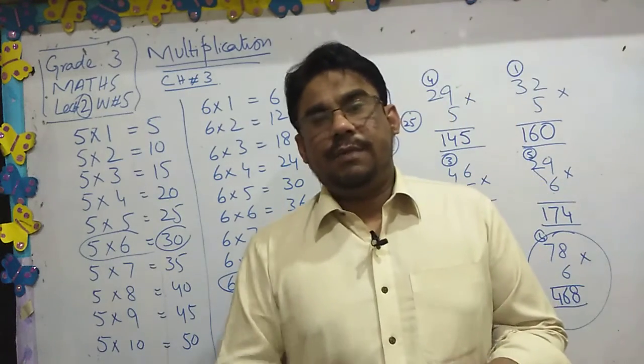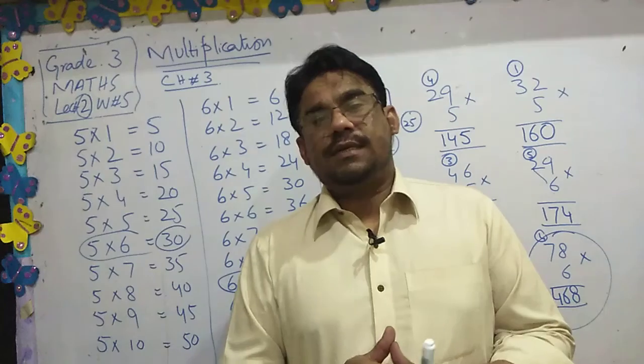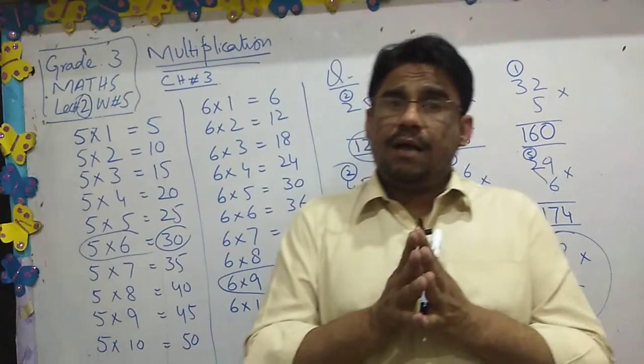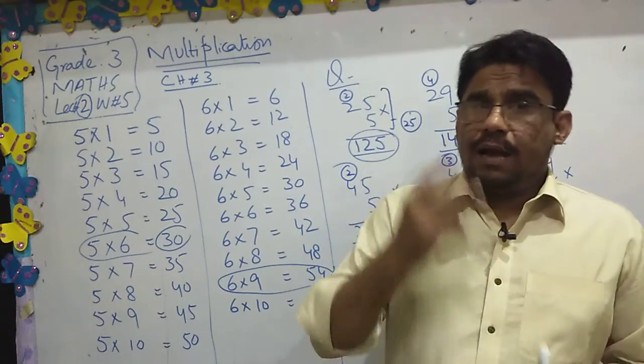6 times 1 equals 6. 6 times 2 equals 12. 6 times 3 equals 18. 6 times 4 equals 24. 6 times 5 equals 30. 6 times 6 equals 36.